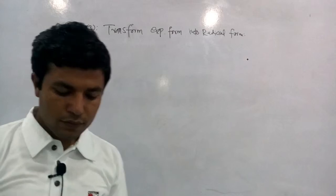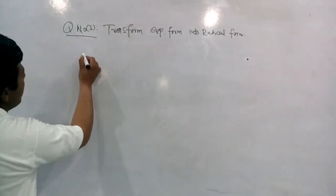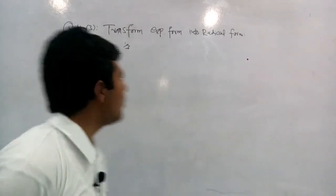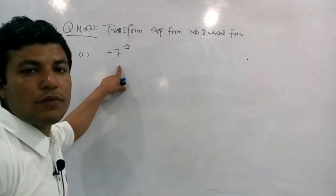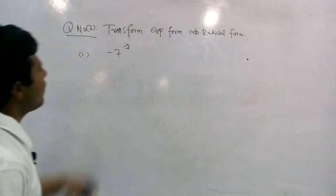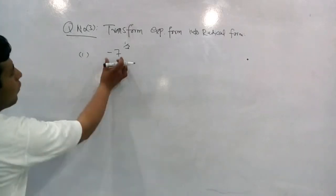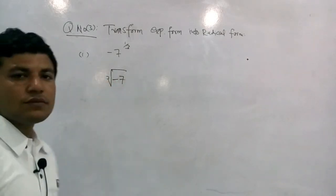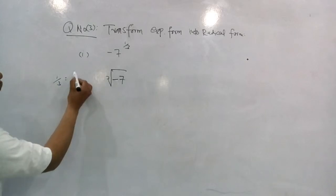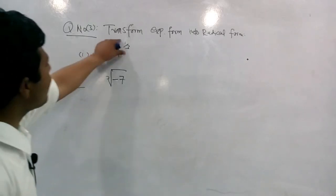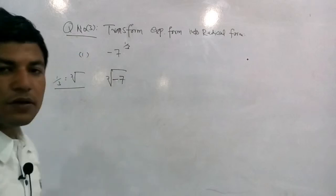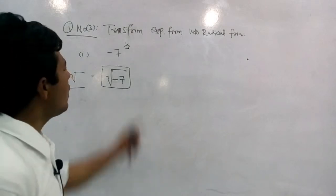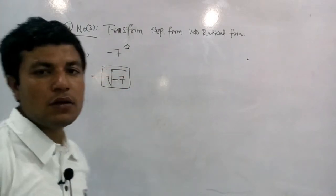Transform into radical form. Question number 1: minus seven to the power one by three. یہ exponential form میں given ہے، تو اسے radical form میں transform کریں گے۔ Minus seven اور one by three کی ہم cube root لکھیں گے - کیونکہ one by three cube root کے برابر ہوتا ہے۔ یہ exponential form سے radical form میں convert ہو گیا۔